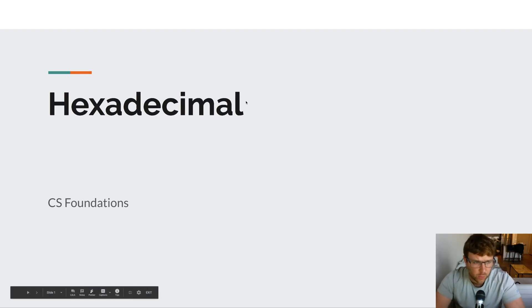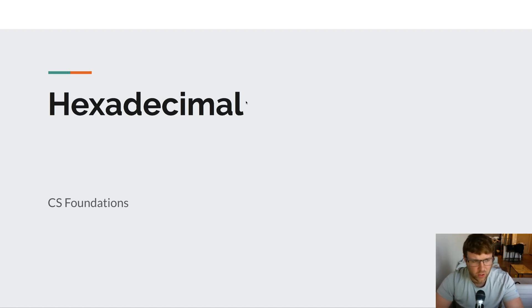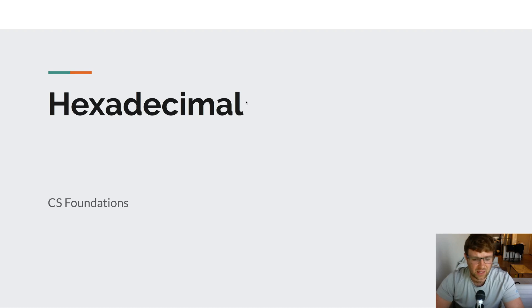Hey everyone, it's Matt here with Kojo. In the last video we talked about the octal number system, which was base 8. At the end of that video I asked the question: what would a numbering system look like that was greater than base 10, that had more than 10 digits? There are lots of options, but a common numbering system used in programming that is greater than base 10 is hexadecimal.